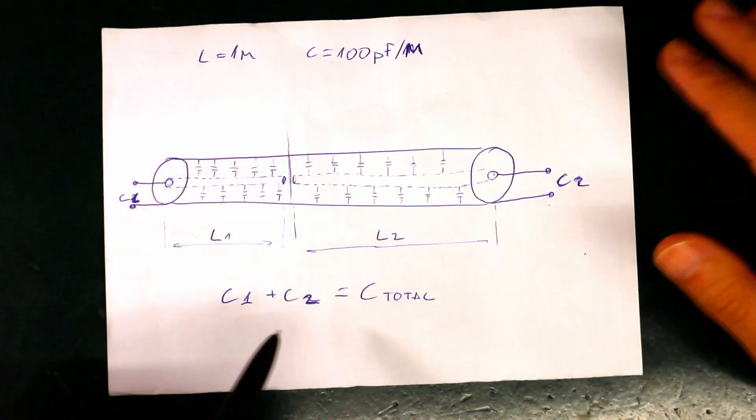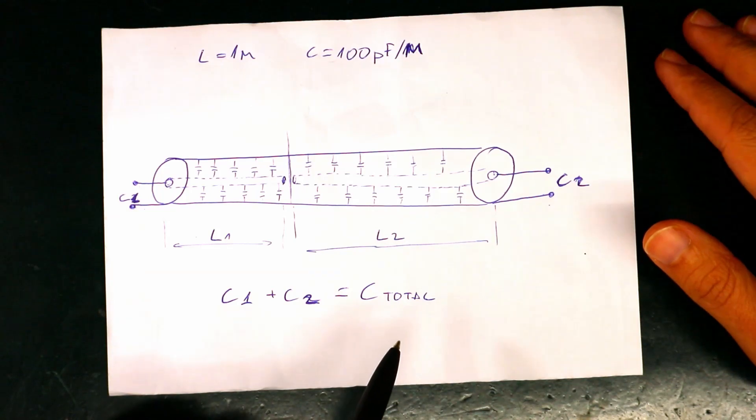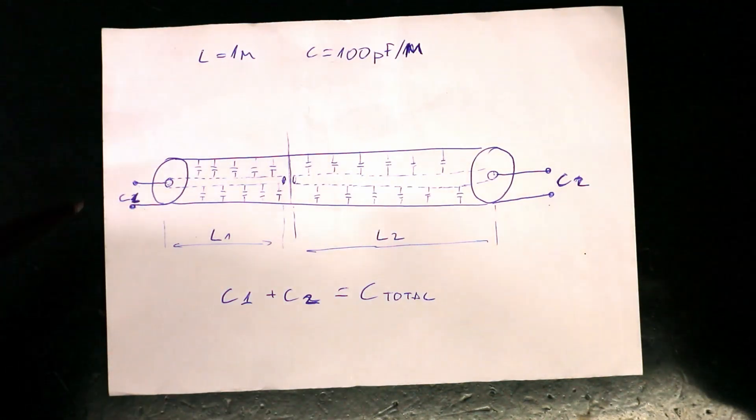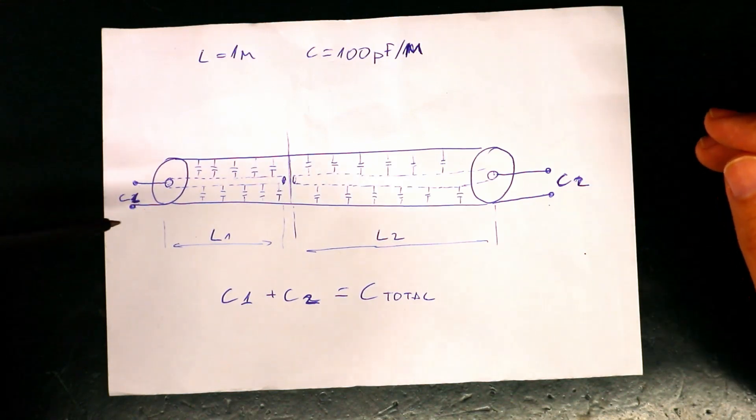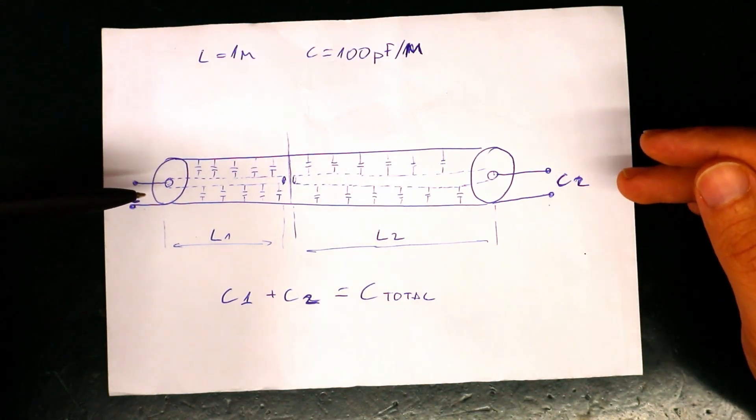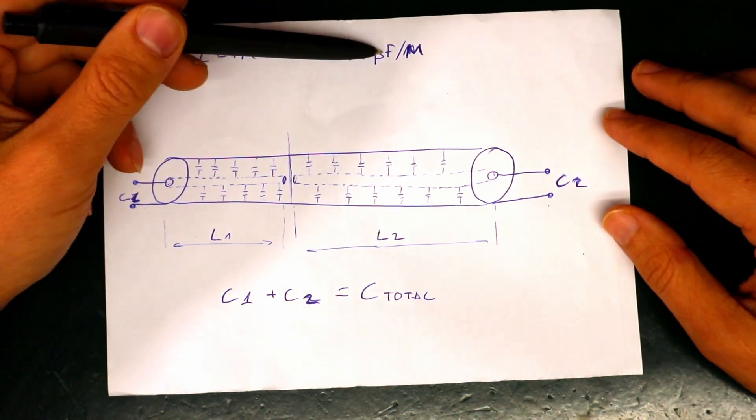If we say that C total is 100 pF just for the example as I said this means that this cable has a capacity of 100 pF per meter.